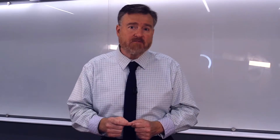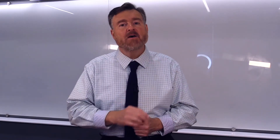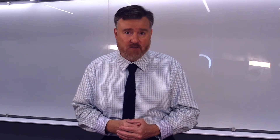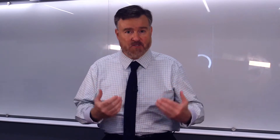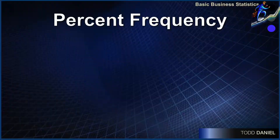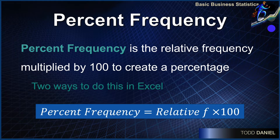However, relative frequency is also difficult to interpret, but we can fix that by multiplying our relative frequency by 100, giving us a percentage in what is called percent frequency. Percent frequency is simply the relative frequency multiplied by 100, creating a percentage. I'm going to show you two ways that we could create this percent frequency using Microsoft Excel.